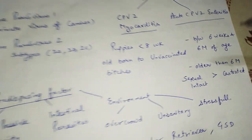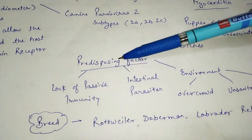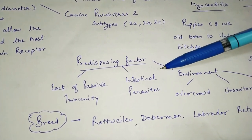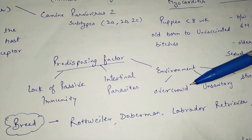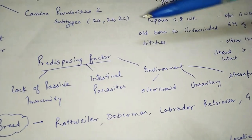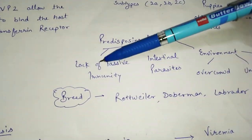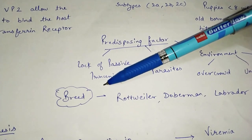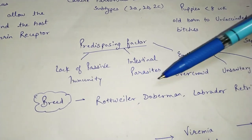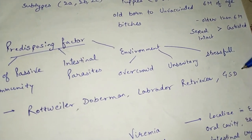Predisposing factors for canine parvovirus infection include lack of passive immunity, intestinal parasites, overcrowded environment, unsanitary conditions, and stressful environment. Breeds more susceptible to this infection include Rottweiler, Doberman Pinscher, Labrador Retriever, and German Shepherd.